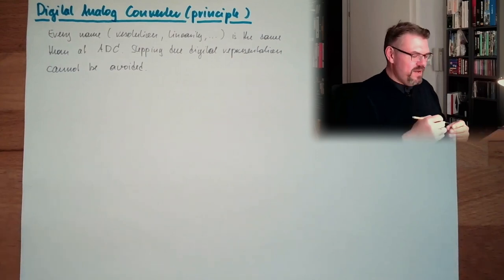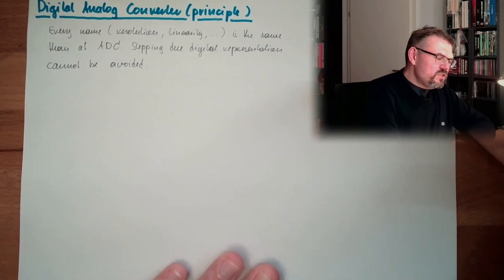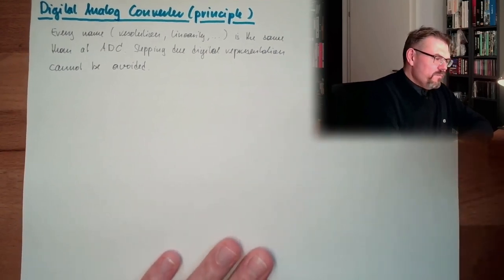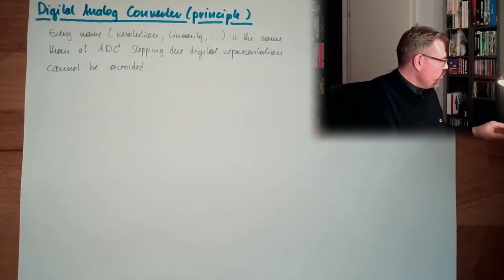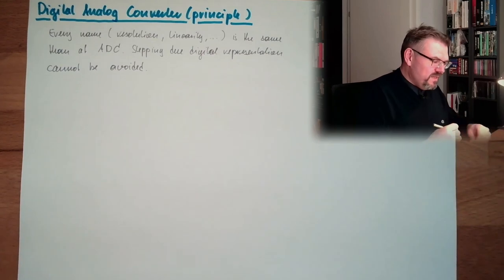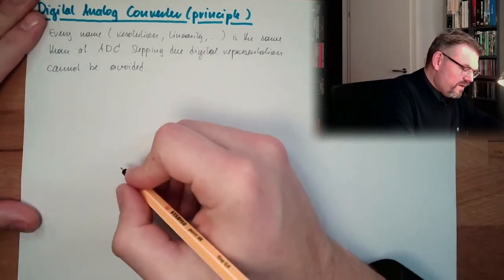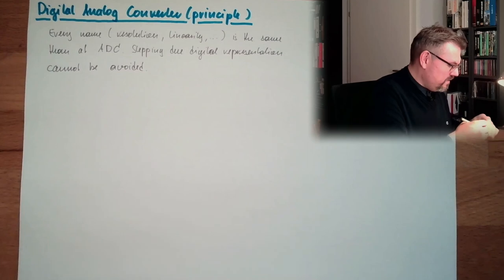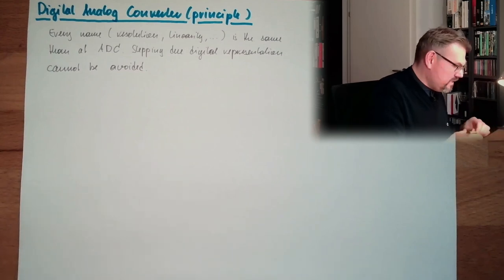So it is not really analog. How is such a digital analog converter working in principle? I'll show you the working principle. Let's do it with a 4-bit example.